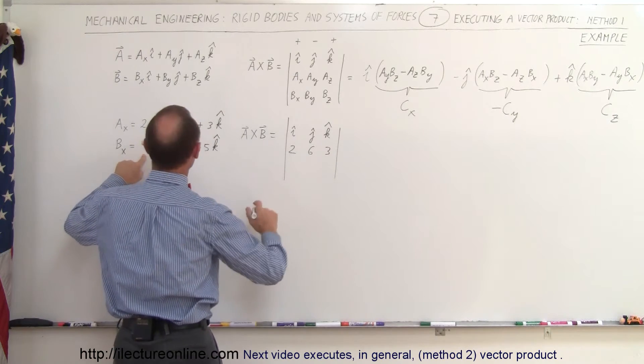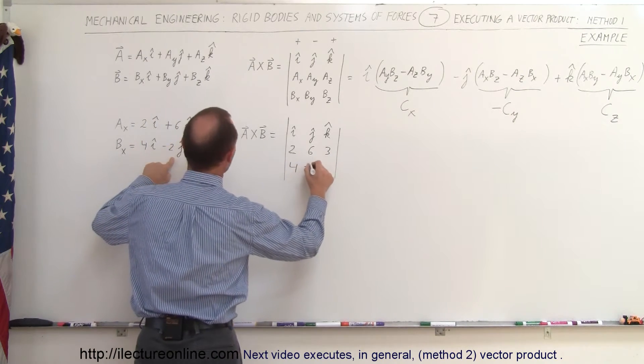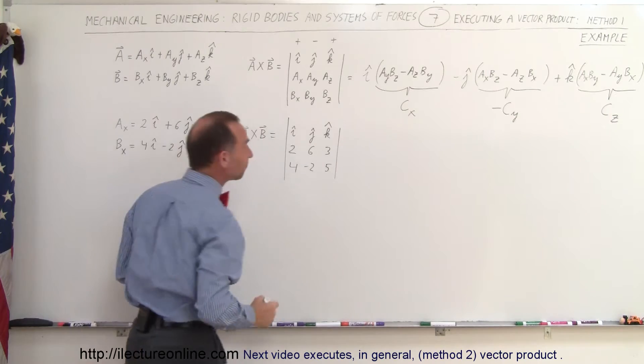And then here we put in the X, Y, and Z component of B which is 4, negative 2, and 5. Now we just execute.